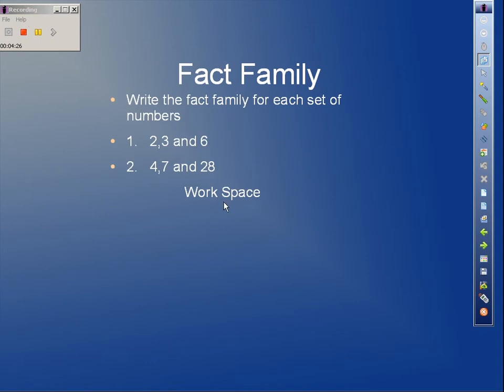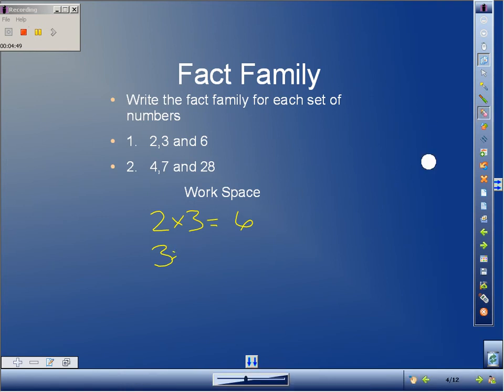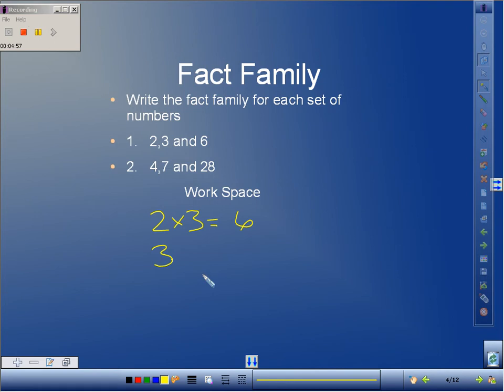Fact families - let's practice a few fact families. This first one we have 2, 3 and 6. Let's make a fact family with 2, 3 and 6. We can go 2 times 3 is equal to 6, and we can also do 3 times 2 equals 6.